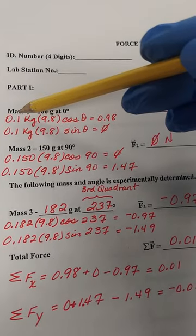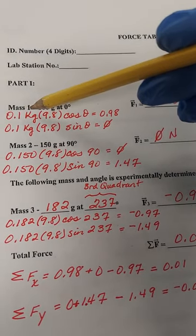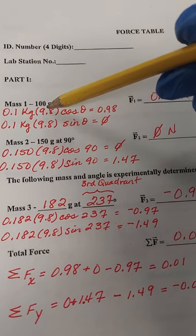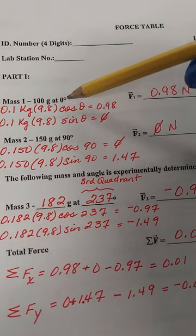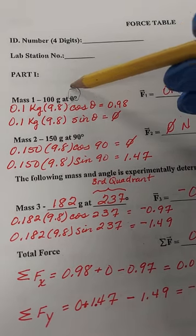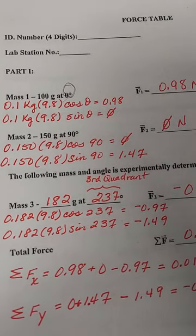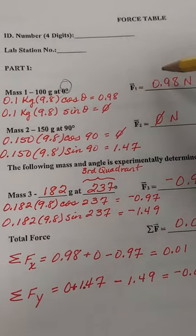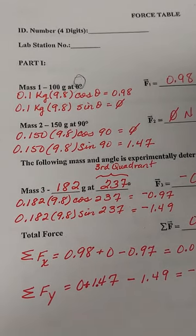100 grams is 0.1 kilograms mass times gravity, 9.8, times the cosine of angle theta, which is zero. And that equals 0.98 newtons. So that's what we put for the force in the x direction.